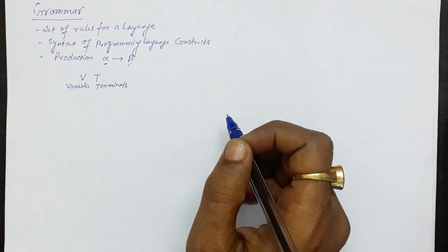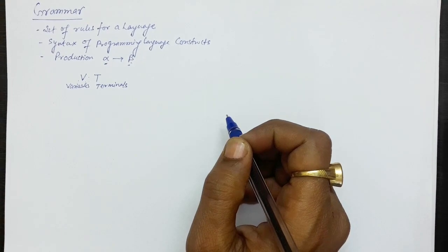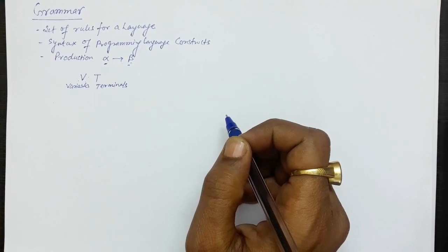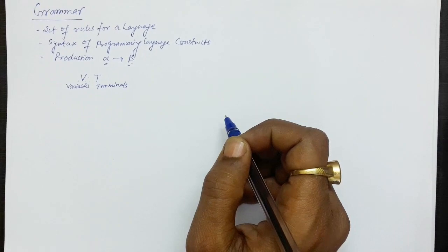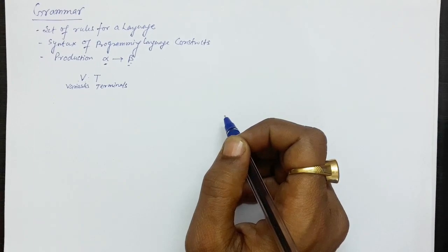Hello everyone. In this lecture we will learn about grammars. In every language that we speak or write, there are certain rules defined for that language. The constructs of that language are written according to those rules. Since we are dealing with natural languages such as Hindi, English, or any other language, the set of rules defined for those languages are known as grammar. The same applies to programming languages. Every grammar is actually the collection of some productions.